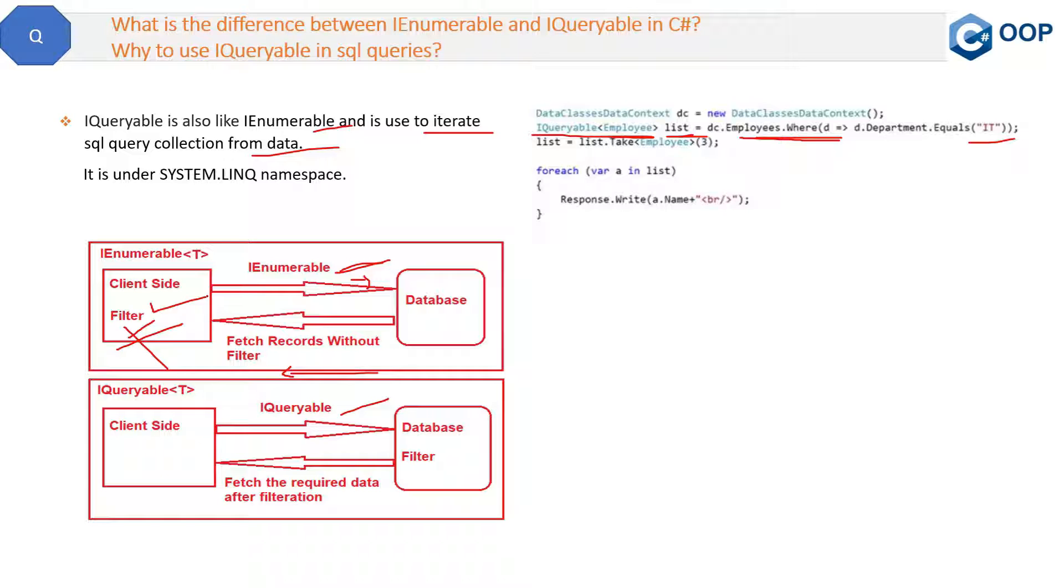it will go to the database and then it will filter the data there only. It will not bring the whole data back to the server side or client side. It will just filter the data, and then data will be less. And only the required data after the filtration will pass from the